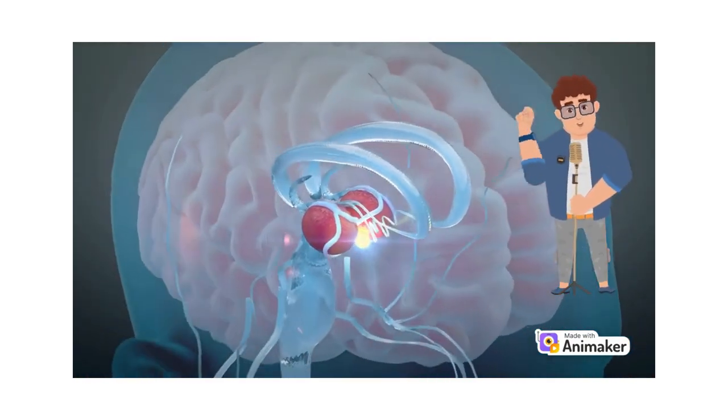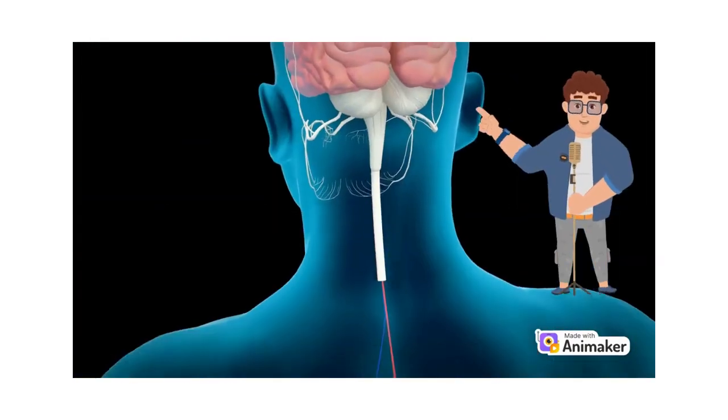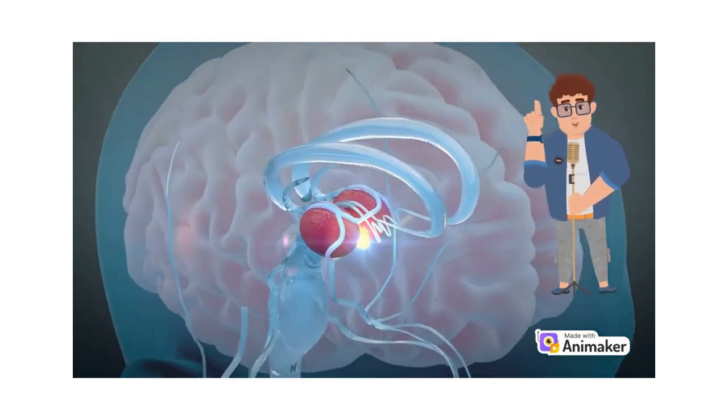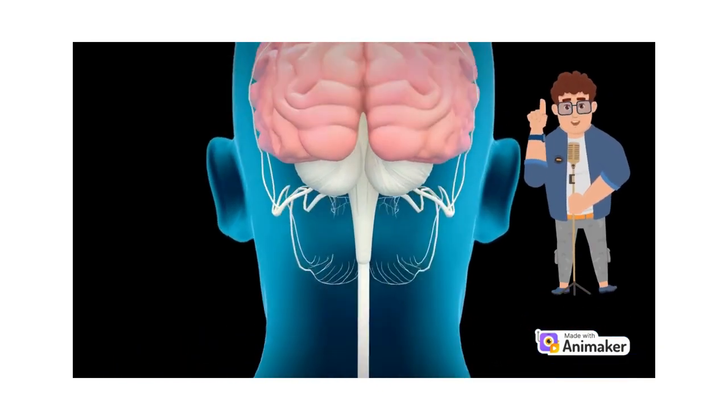Neurogenesis happens in the hippocampus, which is responsible for short-term memory, and in the olfactory bulb, which is responsible for our sense of smell. The rest of the brain is not capable of growing new cells.